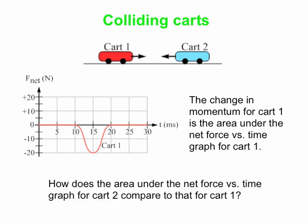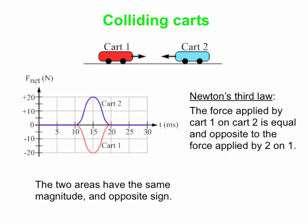What do you think the area under the net force versus time graph is for cart 2? When we stick cart 2's force graph on here, what are we going to get? You've seen that before. This is a consequence of Newton's third law. If cart 2 applies a force to cart 1, cart 1 applies an equal and opposite force back on cart number 2. So the areas under the curves have the same magnitude and opposite signs.